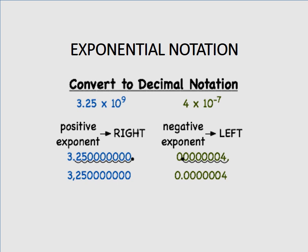Now we will convert exponential notation to decimal notation. For example, we have 3.25 times 10 raised to the power of 9. Since 9 is a positive number, it indicates the decimal point should be moved to the right. From 3.25, we count 9 places to the right, giving us an addition of 7 zeros.